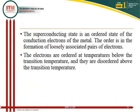We always take the superconducting state as an ordered state of conduction electrons in a metal. The order is in the form of loosely associated pairs of electrons, and this state is termed the ordered state. When we keep the temperature below the transition temperature, the electrons become ordered. When we keep the temperature above this, they become disordered. So this is another way of expressing the behavior of superconductors.